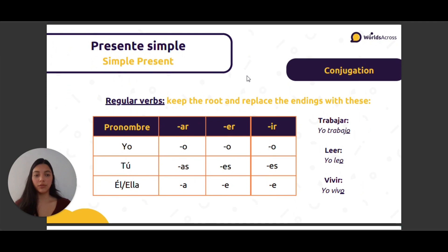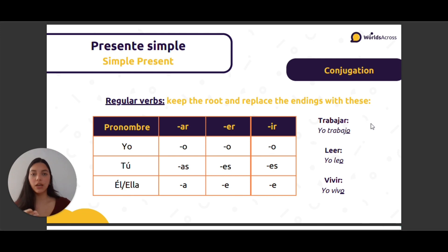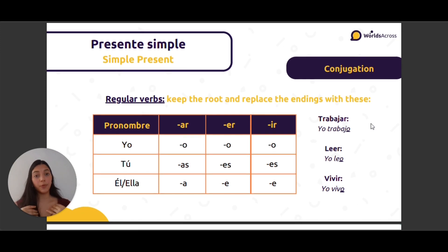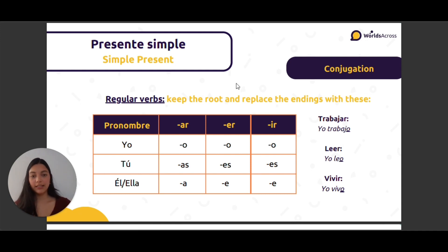We have the conjugation of the regular verbs, o verbos regulares. So we have to keep the root and replace the endings. We share these with our pronouns: yo, tú, él, ella. And the endings for the verb in Spanish are: AR, ER, IR.